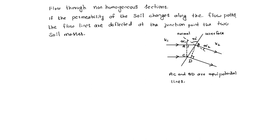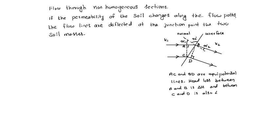The head loss between equipotential lines AC and BD — the head loss between A and B is delta H, and also between C and D is also delta H, because these are equipotential lines.